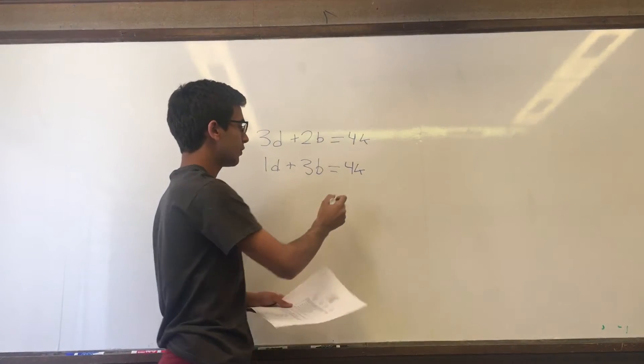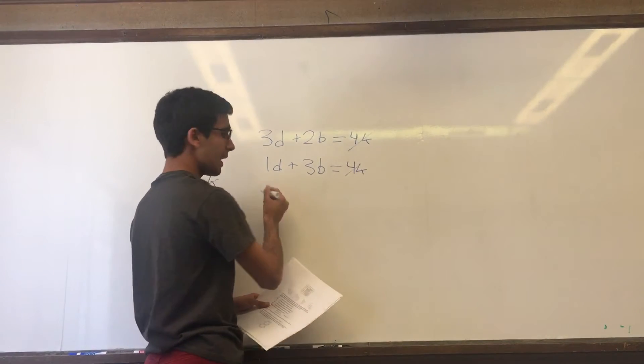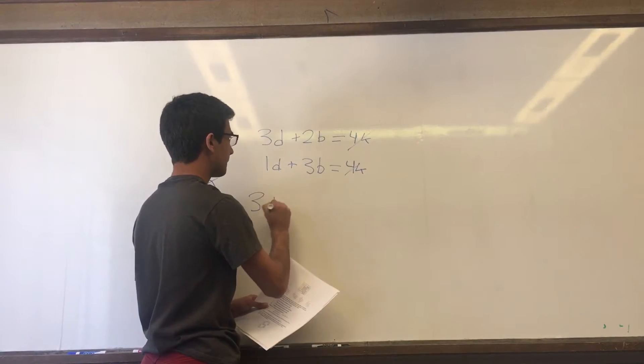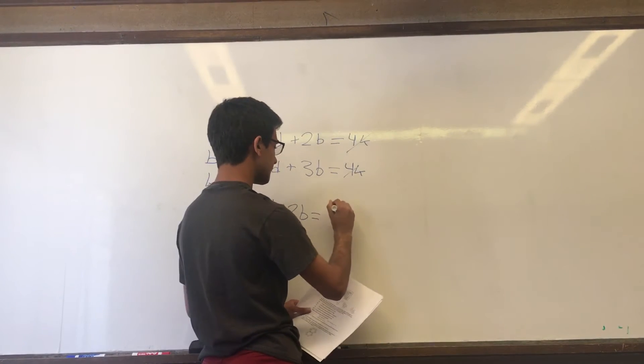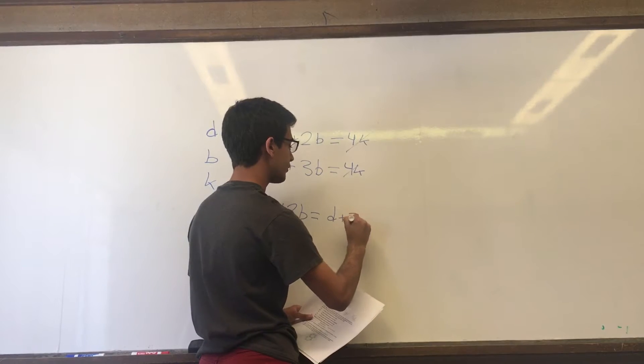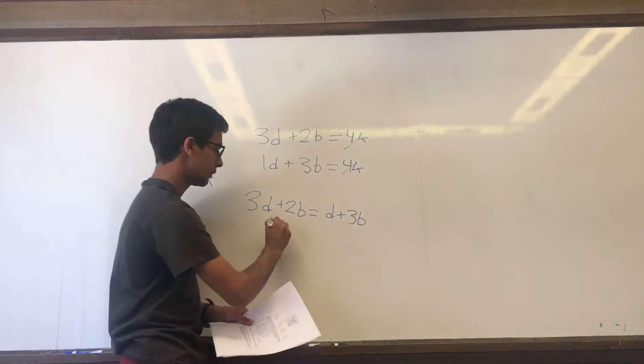So what we can do is eliminate the 4k and set the equations equal to each other. Now we have 3d plus 2b equals d plus 3b. If we combine our variables, we subtract 2b from both sides.